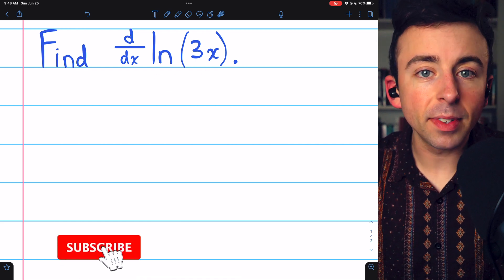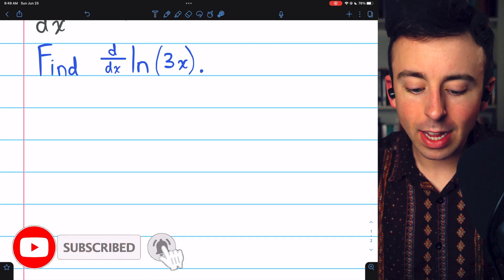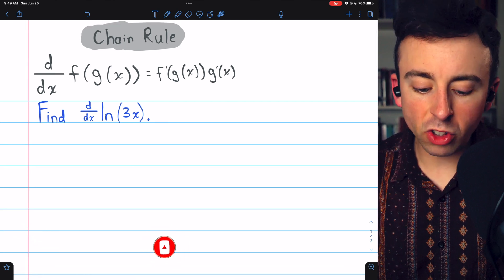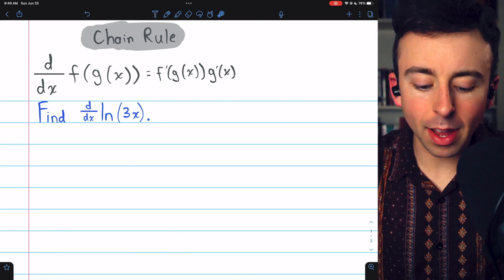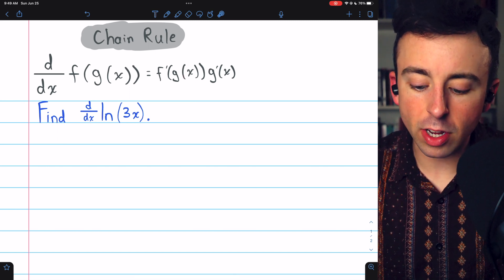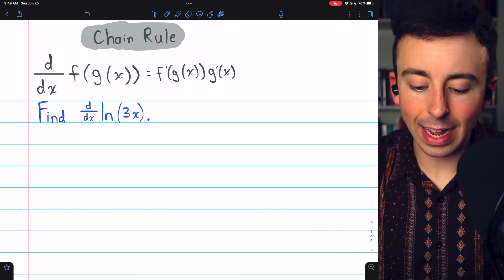The natural log of 3 times x is a composite function, so to take its derivative we need to use the chain rule, which tells us the derivative of a composite function f of g of x is f prime of g of x multiplied by g prime of x.